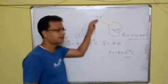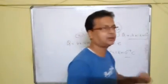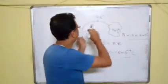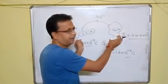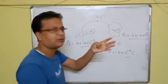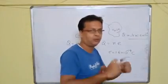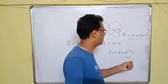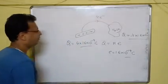Charge moves in steps — these are packets of charges moving from the glass rod to the silk. Charge moves one step at a time, and that is what we call quantization of charge.